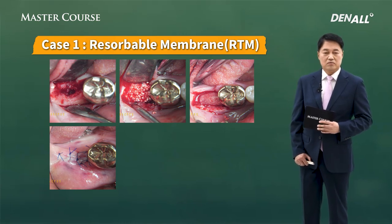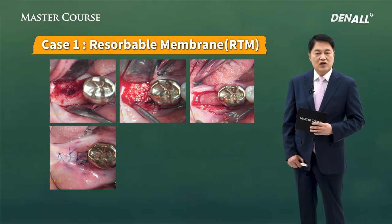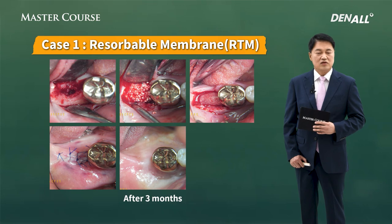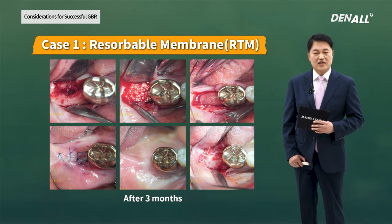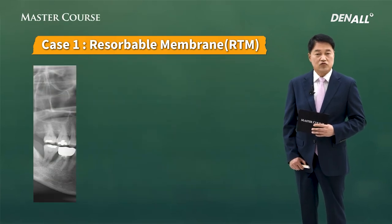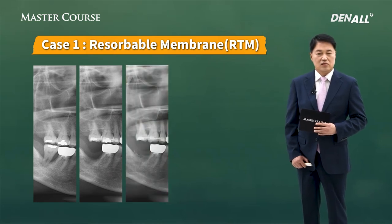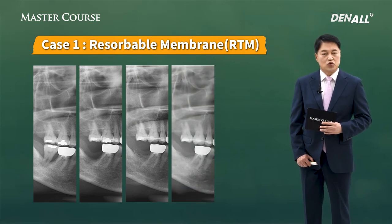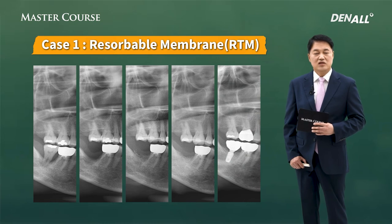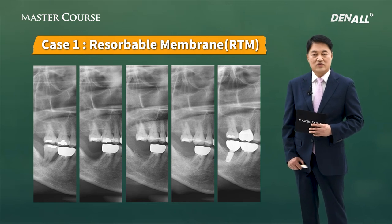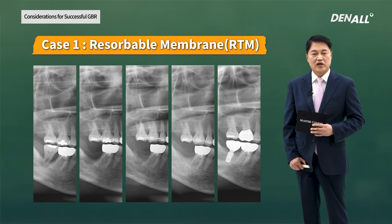Interrupted suture and horizontal internal mattress suture was used. This is after three months — primary closure was nicely done and healing is very nice. When you open the flap, you can see that solid bone has been formed. On the x-ray, this is before extraction and after extraction healing. It was difficult to place implant, so GBR was conducted and it was rather successful — it's not difficult to place implant now. Implant was placed and prosthesis was delivered. Resorbable membrane was used to do vertical augmentation and the implant was placed well.